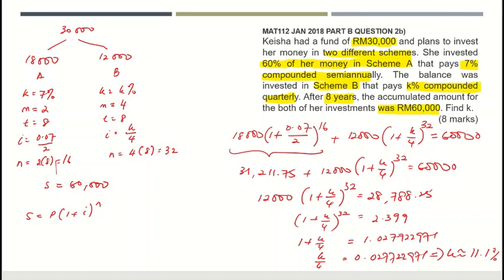So the value of k in this question is approximately 11.1%. Hopefully you now have some ideas on how to solve these problems. This is the first tutorial on the topic of compound interest — we have another four tutorials coming up. Thank you very much and see you next time!